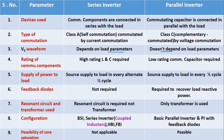Fourth one is rating of commutating components. In the series inverter, high rating of commutating components L and C is required, as the commutating capacitor is required to carry the load current continuously and also has to supply the load current in every alternate half cycle. Whereas in the parallel inverter, low rating of commutating capacitor is required, as the capacitor is not supposed to carry the load current continuously.